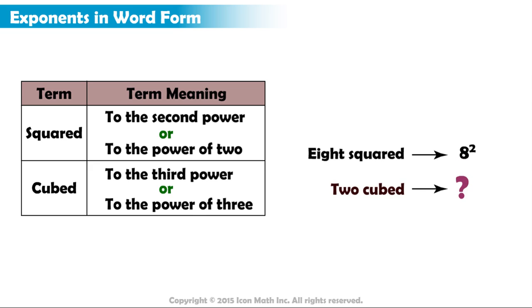What is the exponential notation of 2 cubed? Cubed means to the power of 3. So, 2 cubed equals 2 to the power of 3.